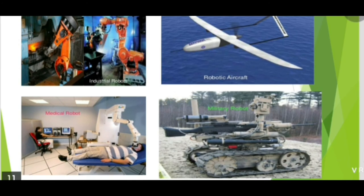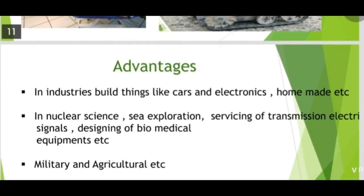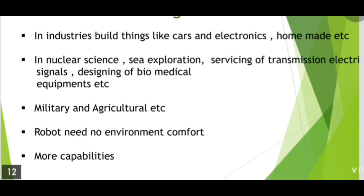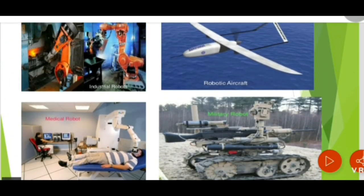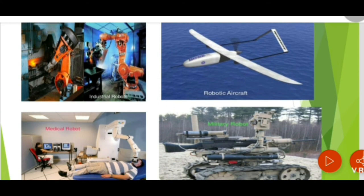Here are some pictures of robots. First is industrial robots. Second is robotic aircraft. Third is medical robots. And fourth is military robots. Their advantages, disadvantages, areas of robotics, and conclusion will be explained by my friend Harshada Karse.